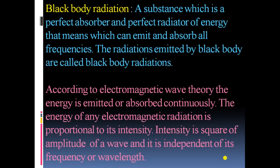Blackbody Radiation: A substance which is a perfect absorber and perfect emitter of energy of all frequencies is known as a blackbody, and the radiations emitted by a blackbody are known as blackbody radiation. According to Electromagnetic Wave Theory, energy is emitted or absorbed continuously, and the energy of any electromagnetic radiation is proportional to its intensity. Intensity is the square of amplitude of a wave, and it is independent of frequency or wavelength.